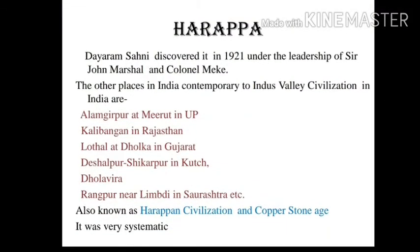Harappa had the most systematic town planning, with houses having all facilities like kitchens and storehouses, and many forts were also excavated. This culture developed in the region of Sapta Sindhu, where many rivers including the River Indus were flowing. The culture developed on the banks of the River Indus is called the Indus Valley Civilization, also known as Harappan Civilization because its remains were first found at Harappa. Many copper and stone weapons and other things were also found here, so it is called the Copper Stone Age.